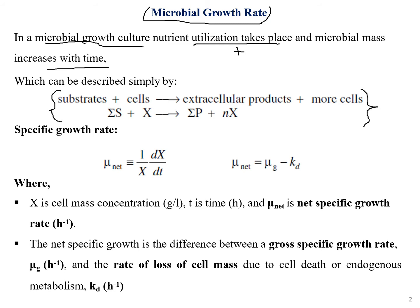This can be demonstrated by a simple reaction as shown here: substrate plus cells — we are supplying nutrients to the cells. These cells produce extracellular products, plus more cells as they reproduce. Supplying cells with nutrients leads to the formation of more microbial mass, extracellular products, and more cells, given by: ΔS + S = ΔP + nX, where n is the number of cells.